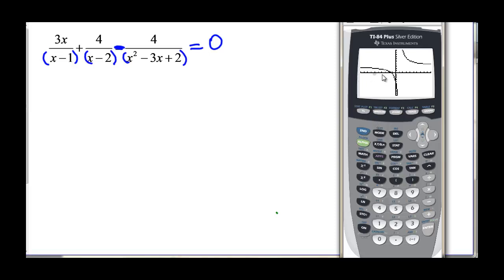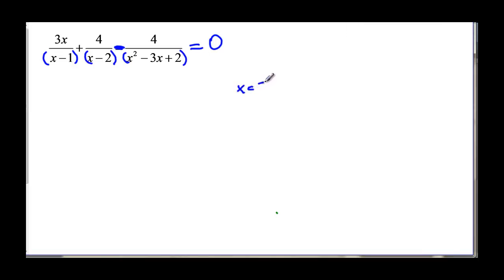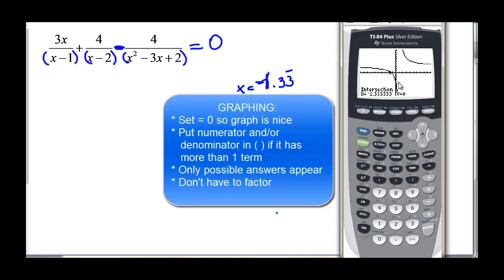Use second trace, option five to find the intersection. Press enter three times and the calculator shows x equals negative 1.33 repeating — that's our answer. Notice that at x equals two, which was our other answer, there is no intersection on the graph. The nice thing about graphing is it will only show you answers that actually work; it won't show the ones we'd have to disregard if working on paper.